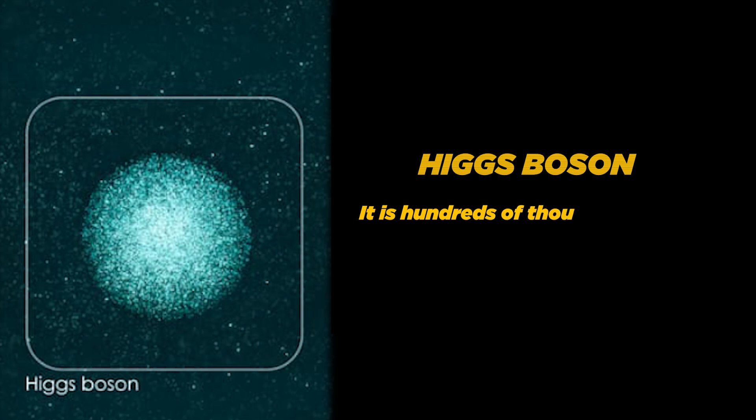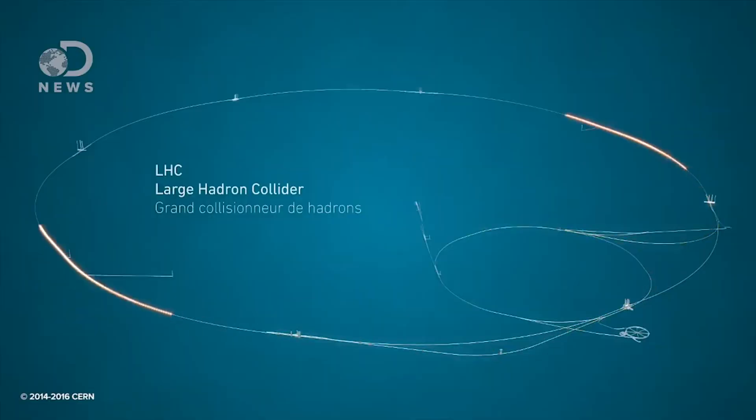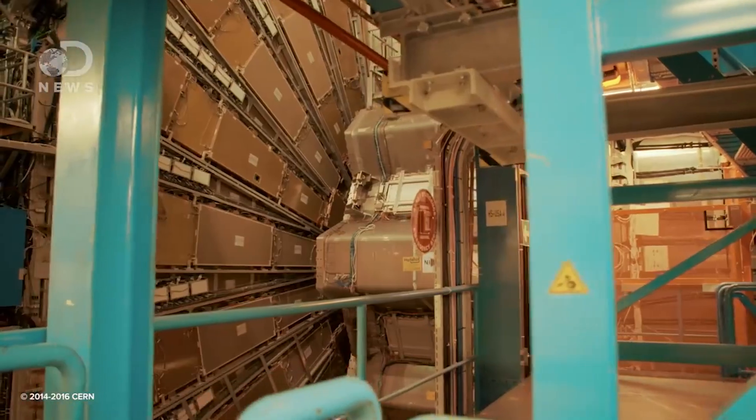For example, let's take the Higgs boson. It is hundreds of thousands of times more massive than an electron. And even though electrons are easy to create and detect in an experiment, the Higgs boson is not. And that's why we need an enormous machine like the LHC to detect it, as only such a powerful machine is capable of giving the Higgs field this much energy.